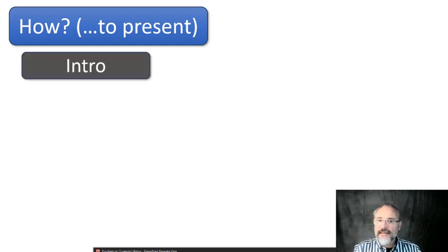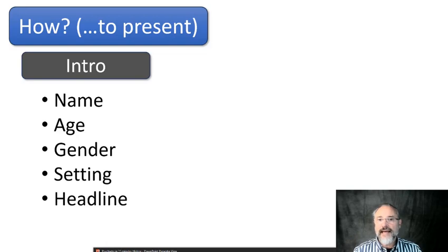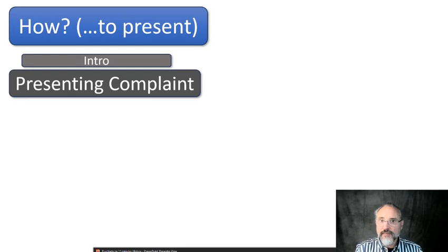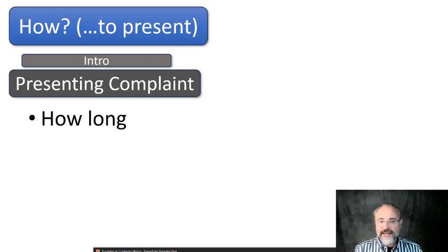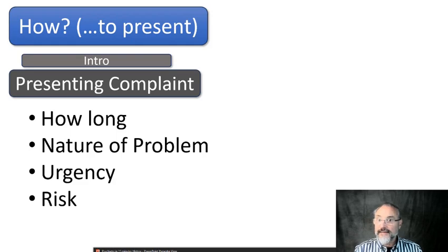The introduction is not dissimilar to medical presentations, but it is important to have six bits of information. For example: 'I'm going to present Joe Bloggs, who is a 35-year-old man who I met in A&E because he had taken an overdose, and I'm presenting him because I need to know whether I can discharge him.' That puts the listener at ease. After that you move on to the first heading, which is the presenting complaint — a description of what problem brought the patient to you, covering what is happening now, the urgency, and the risk.